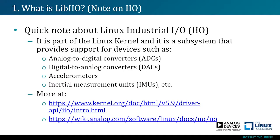Before going further, I would like to say a few words about the Linux Industrial Input Output, or IIO. It is a part of the Linux kernel and it is a subsystem that provides support for devices such as analog to digital converters, accelerometers, capacitance to digital converters, digital to analog converters, gyroscopes, IMUs, color and light sensors, magnetometers, pressure sensors, proximity sensors, and temperature sensors. More about this can be found on kernel.org and also on wiki.analog.com.